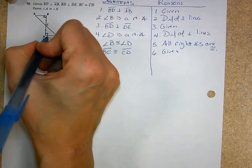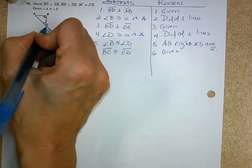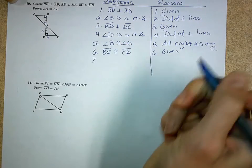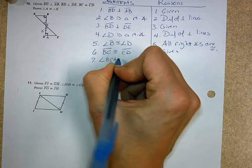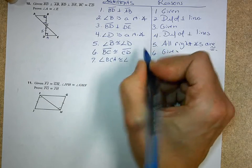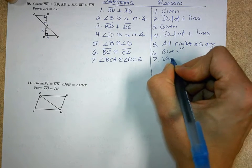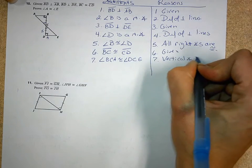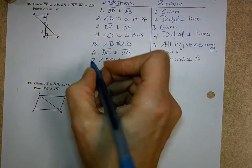So we get segment BC is congruent to segment CD. Now, I'm kind of stuck. I only have an angle and a side. I need something else. Well, I use the fact I have vertical angles. So I'm going to go angle BCA is congruent to angle DCE by the vertical angle theorem.